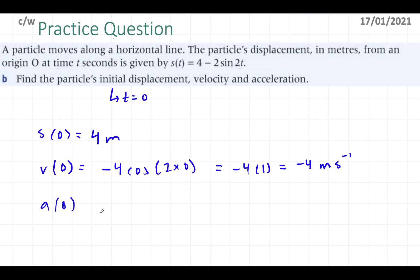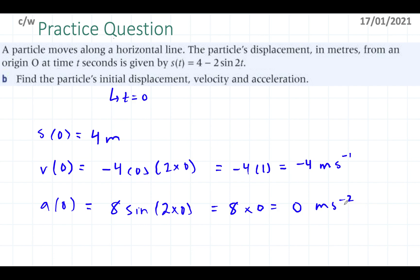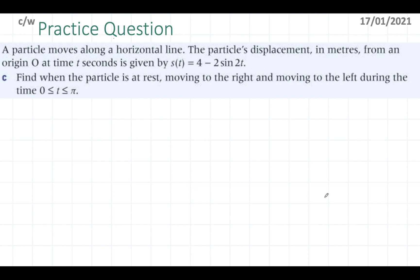For the acceleration at t = 0, using the formula 8 sine(2 × 0): sine(0) = 0, so 8 × 0 = 0 meters per second squared. To interpret this: initially the particle is 4 meters away from the origin. It has a velocity of negative 4, meaning it's moving in the opposite direction — back to the left. But it's not accelerating; the velocity is constant at that instant.